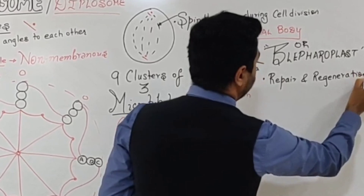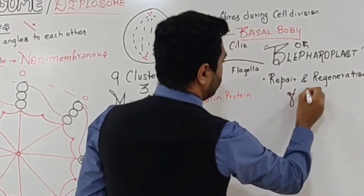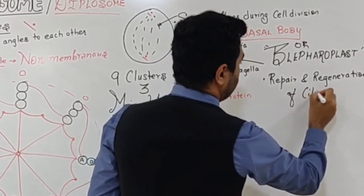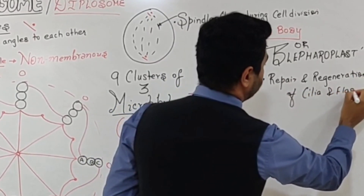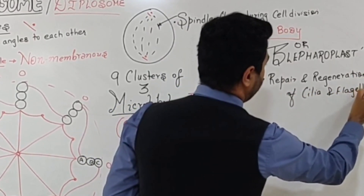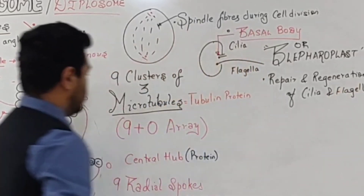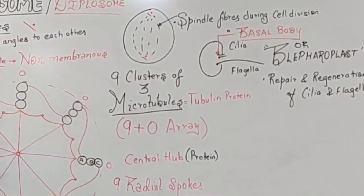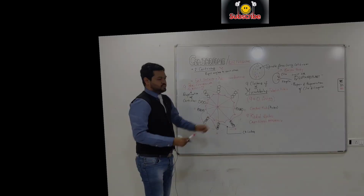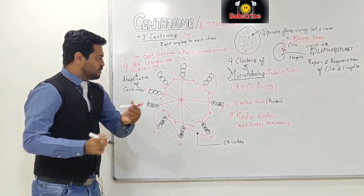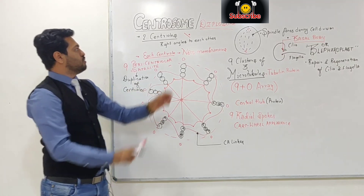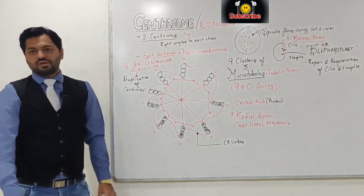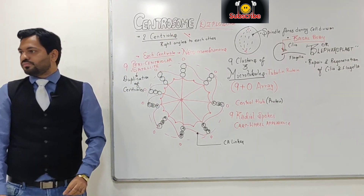So this is the entire structure of centriole. Two centrioles like cylinders at right angles form the centrosome. Centrioles form spindle fibers, act as the basal body or blepharoplast from which cilia and flagella arise, and help in their repair and regeneration.